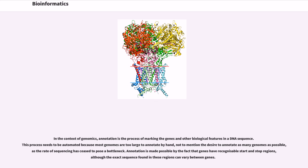In the context of genomics, annotation is the process of marking the genes and other biological features in a DNA sequence. This process needs to be automated because most genomes are too large to annotate by hand, not to mention the desire to annotate as many genomes as possible, as the rate of sequencing has ceased to pose a bottleneck. Annotation is made possible by the fact that genes have recognizable start and stop regions, although the exact sequence found in these regions can vary between genes.